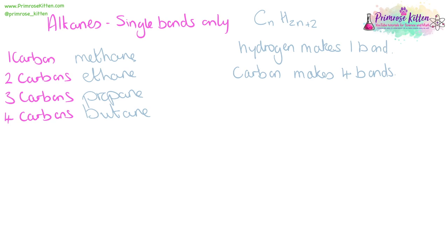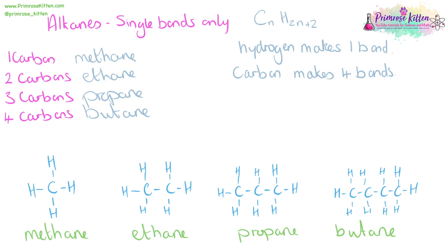When we're drawing organic compounds, the important thing to remember is that hydrogen always makes one bond and one bond only, and carbon always makes four bonds and four bonds only. So you can see when I've drawn them, each of the hydrogens here only ever makes one bond.